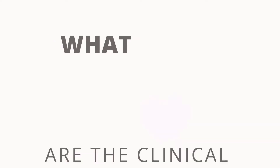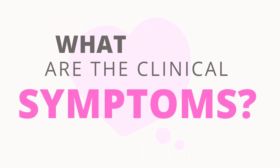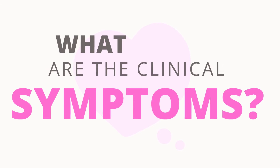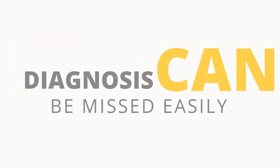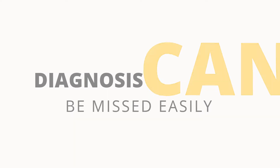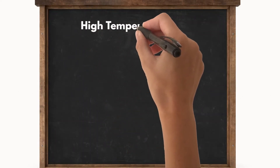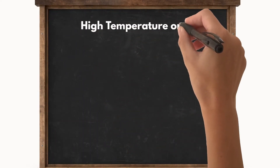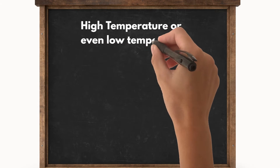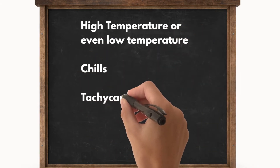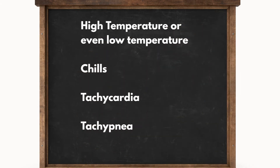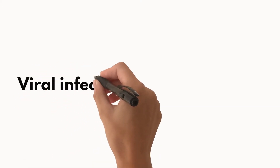The stats are quite overwhelming and show that five people are killed by sepsis every hour in the UK. Sepsis does not always present with fever or any obvious symptoms, and therefore a diagnosis of sepsis can easily be missed. Some of the symptoms of sepsis are a high temperature or even a low body temperature, chills and shivering, tachycardia, and tachypnea.